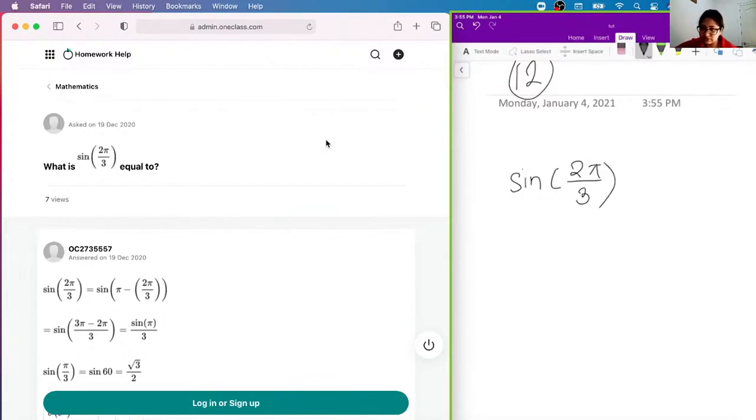So if you use, so basically if you use, you can basically evaluate this by saying, you guys recall that pi is equal to 180, whereas 2pi is equal to 360.